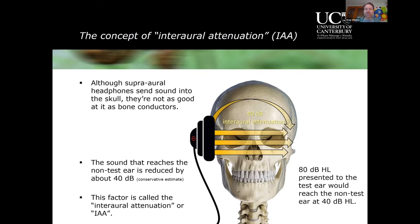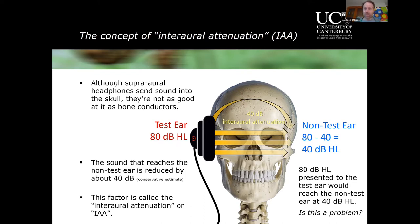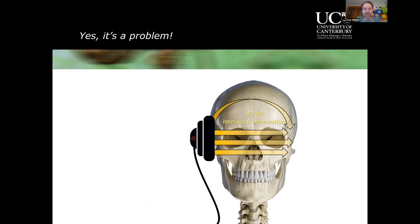So if I'm presenting an 80 dB tone to the test ear, the test ear receives it at 80 dB, but it passes through the skull and arrives at the non-test ear at 40 dB HL (80 minus 40). Is that a problem? Yes it most certainly can be. Imagine we've done air conduction testing, the person said their right ear is worse, and we usually start with the better ear.